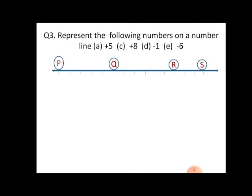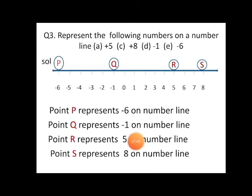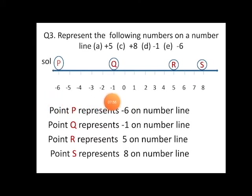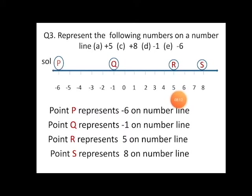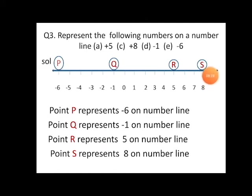Now come to question number three — we have to represent the following numbers on the number line: plus five, plus eight, minus one, and minus six. First we draw a horizontal straight line with arrows on both ends, mark negative numbers to the left of zero and positive numbers to the right. Plus five is represented by letter R marked above it, and plus eight is represented by letter S marked above it.